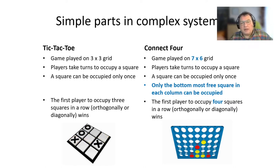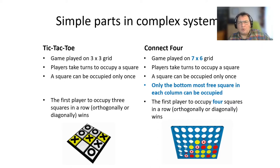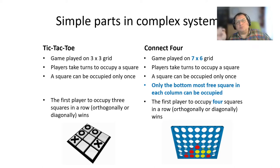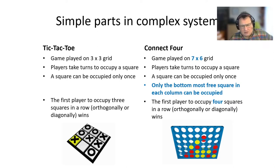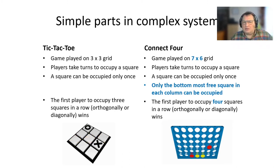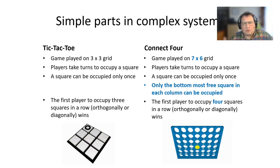Connect Four is played on a slightly bigger grid — not 3x3 but 6x7. Only the bottom-most squares in each column can be occupied, and the first player to occupy four squares in a row wins. So this is a slightly more complex set of rules, but in terms of screen space it takes nearly the same area as Tic-Tac-Toe. Connect Four is not particularly more complex in terms of rules — it is a bit, but not particularly — yet it is such a completely different game.